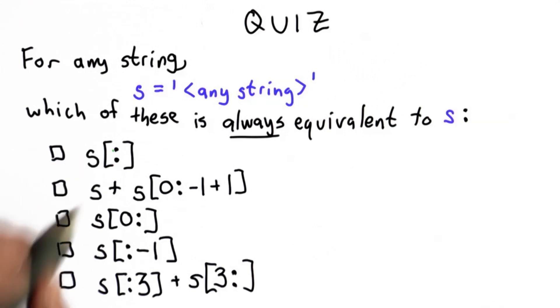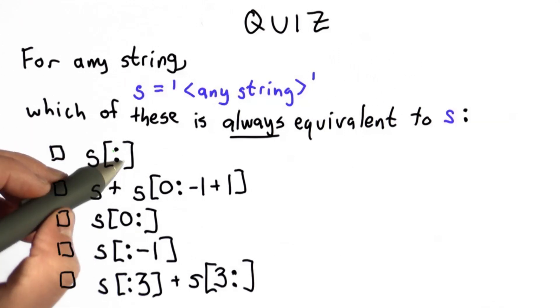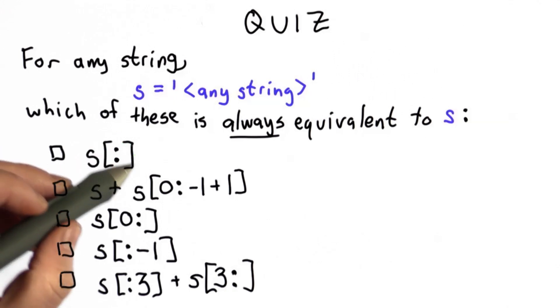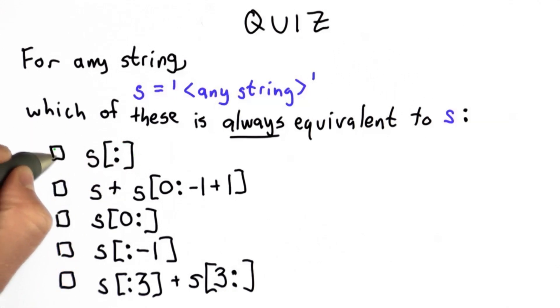Remember what it means to use the colon: when there's nothing on the left side, it means start from the beginning, and when there's nothing on the right side, it means go all the way to the end. So if there's nothing on either side, that's selecting the entire string.